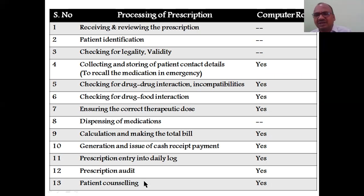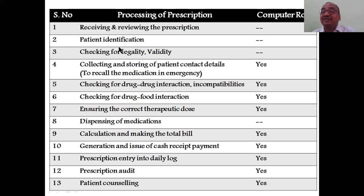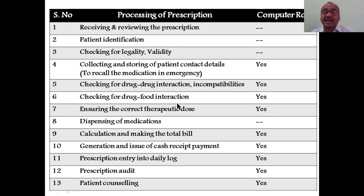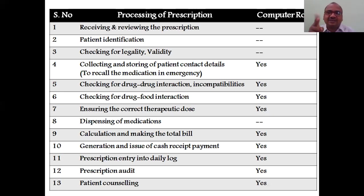There are 13 total steps in processing a prescription. Step one: receiving and reviewing the prescription — not only receiving but also reviewing. You check patient identification (correct or wrong patient), legality and validity (legal or illegal prescription, time-bound or expired), and collecting and storing the patient contact details. Also check for drug-drug interactions, incompatibilities, drug-food interactions, and ensuring the correct therapeutic dose.